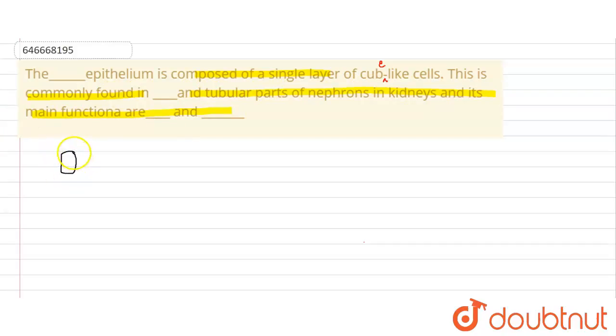So let's draw the structure. They are saying cube-like cells. So what are these? These are the cube-like cells. And in the cube-like cells, the epithelium will be called as the cuboidal epithelium. This is the cuboidal epithelium.